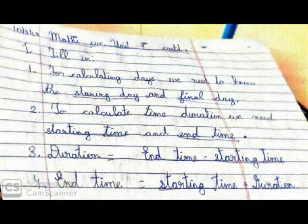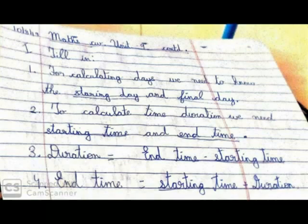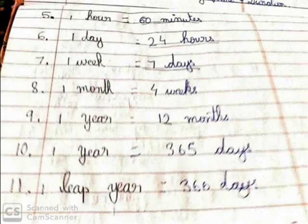For calculating the number of days, we need to know the starting day and the final day. To calculate time duration, we need the starting time and the end time. Duration equals end time minus starting time. End time equals starting time plus duration. One hour equals 60 minutes, and one day equals 24 hours.